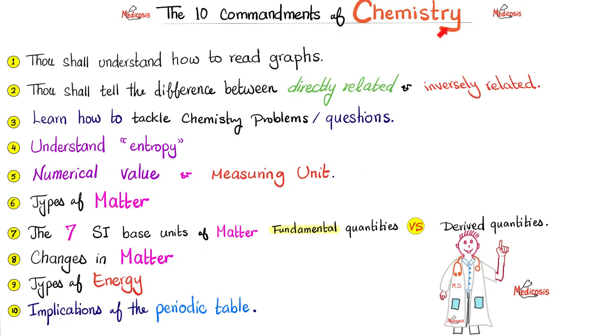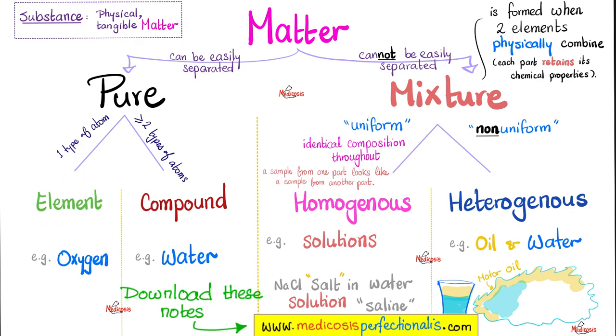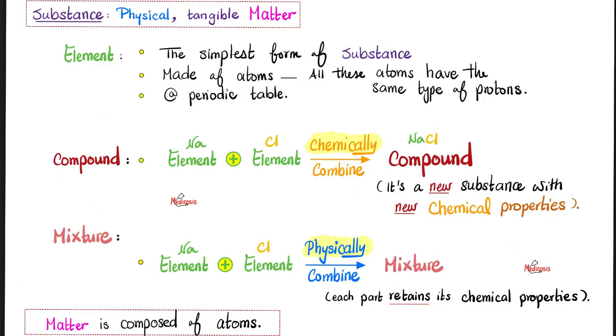Remember my 10 commandments of chemistry? All about matter and energy. Matter could be pure or a mixture. The pure matter could be an element or a compound. If it has one type of atom, it is an element. Sometimes the element is made of one atom, as in sodium. But sometimes it's made of two atoms, as oxygen molecule. What's an element? It's the simplest form of a substance. We call it the periodic table of the elements.